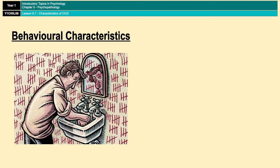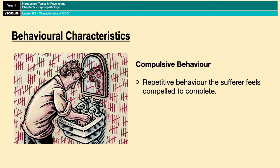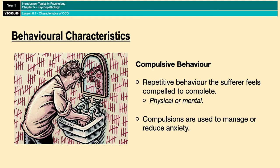Behavioral characteristics of OCD revolve around compulsive behaviors. These behaviors are performed to reduce the anxiety created by the obsessions. They are repetitive and unconcealed, in that no attempt is made to hide them. Examples include hand-washing and checking, but they could also be mental acts such as praying or counting over and over again. People with OCD feel like they must perform these actions or something terrible will happen, creating anxiety, and so the compulsions are designed to reduce that anxiety. Interestingly, the behaviors are often not connected in any realistic way to what they are designed to prevent, and there are even some patients who only experience compulsions without any obsessive thoughts.